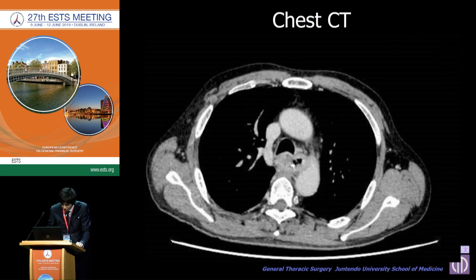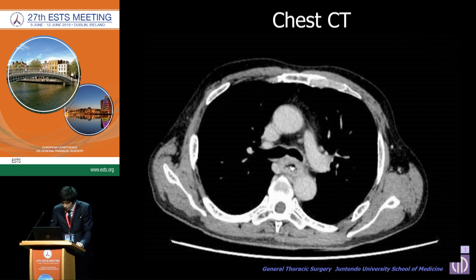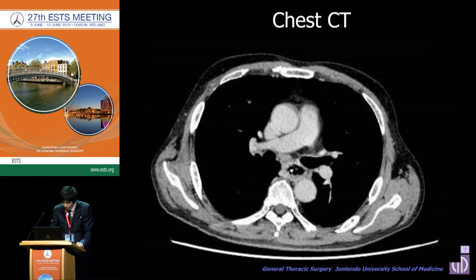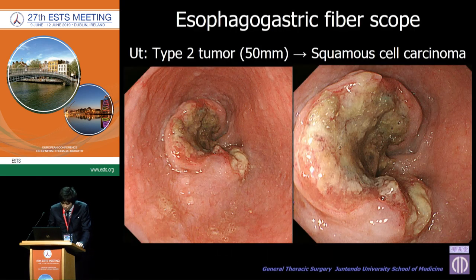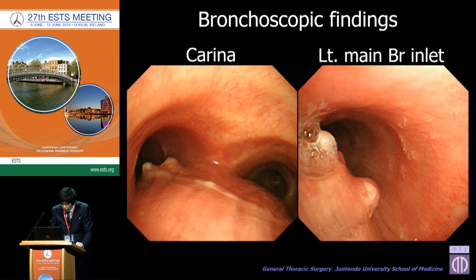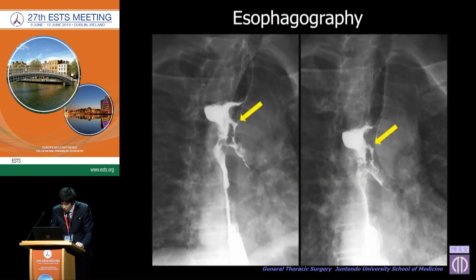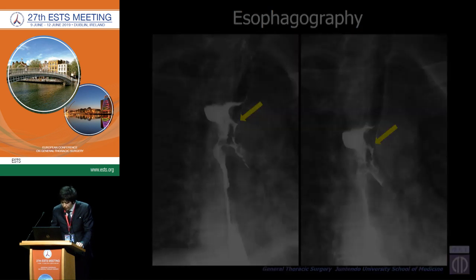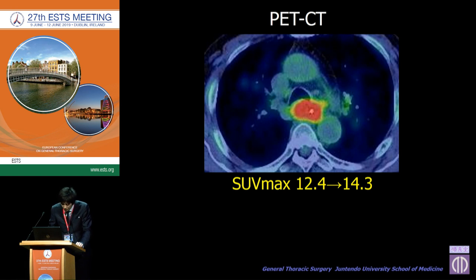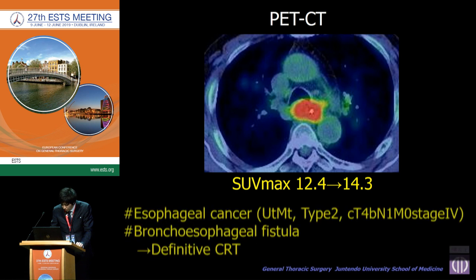The boundary between the left main bronchus and the tumor was unclear. Pre-operative esophageal gastric fibroscopy showed a type 2 tumor at the upper thoracic esophagus, and biopsy revealed squamous cell carcinoma. Bronchoscopy showed an irregular elevative region at the carina to left main bronchus. Esophagography revealed leakage from the esophagus to the left main bronchus, so the clinical diagnosis was bronchoesophageal fistula. PET-CT showed abnormal uptake only at the main tumor with no distant metastasis.